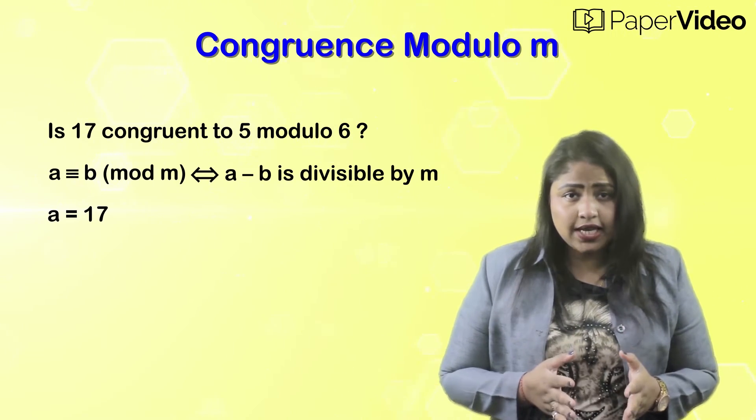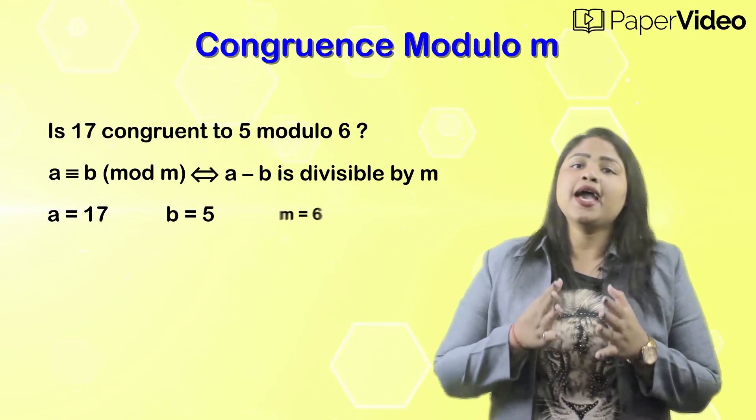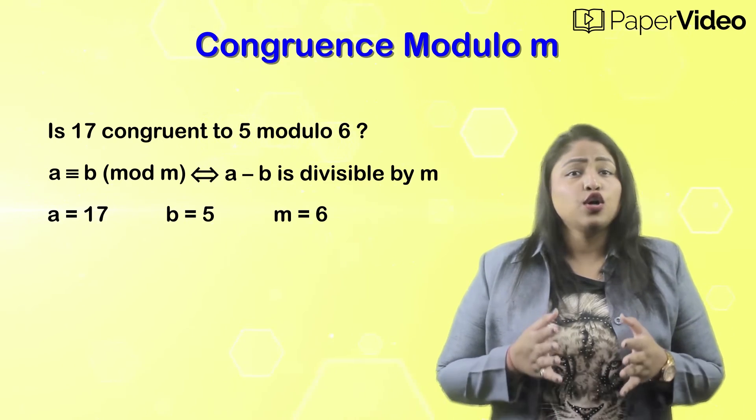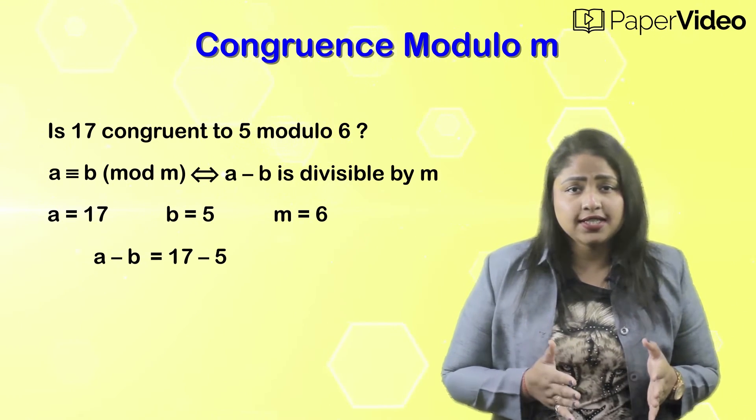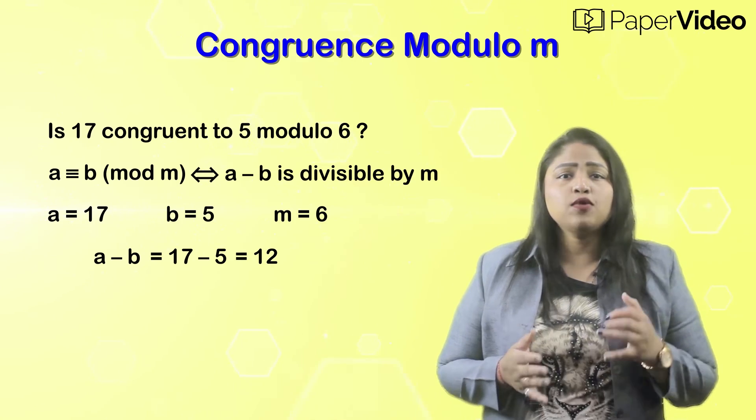Here A equals 17, B equals 5, and M equals 6. So A minus B equals 17 minus 5, which equals 12.